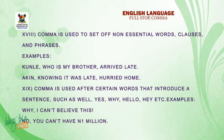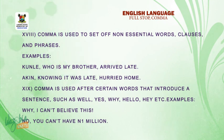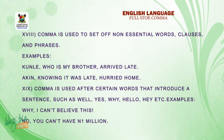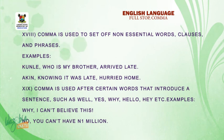Number nineteen: comma is used after certain words that introduce a sentence, such as well, yes, why, hello, hey, etc. Examples: Why, I can't believe this. No, you can't have one millionaire.